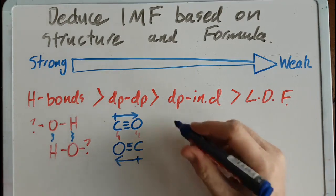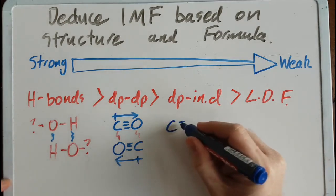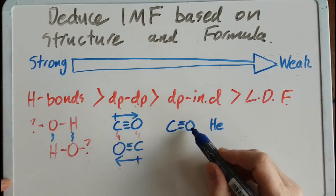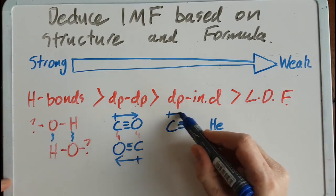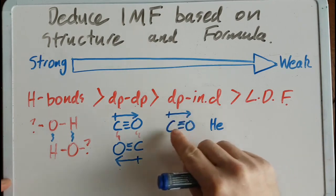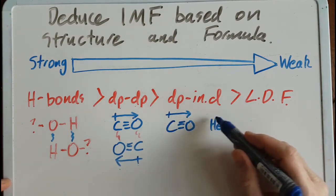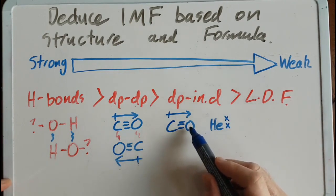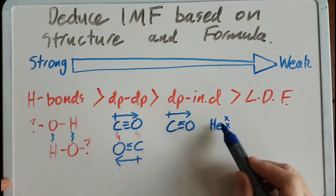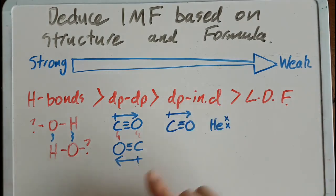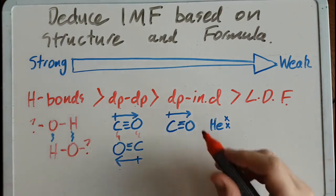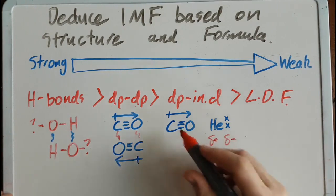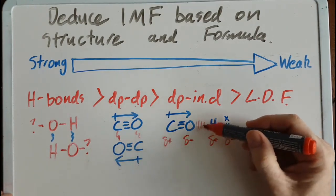Dipole-induced dipole: if you've got carbon monoxide next to helium, since the oxygen end of the molecule is slightly negative, the electrons in the helium atom are going to be slightly more likely to be on the side away from the oxygen. So you get a little negative here, little positive here, little negative there, little positive there — that's the dipole-induced dipole intermolecular force.